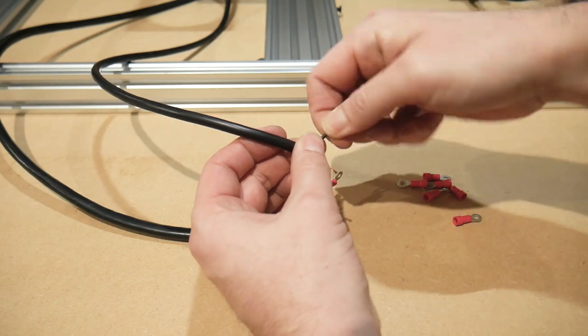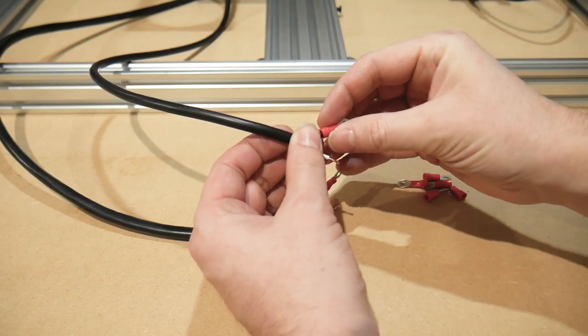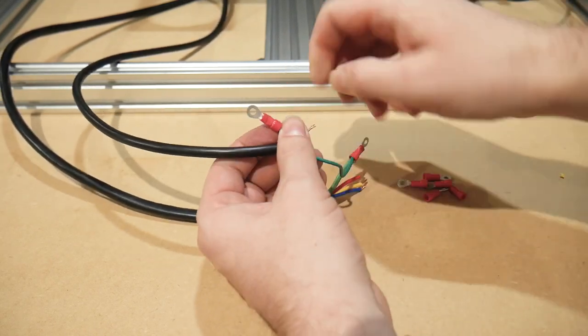Onto the VFD end, I have crimped the ground wire from the wall to the ground wire of the spindle, as well as the shielding of the spindle wire. These will all go to the ground terminal of the VFD.